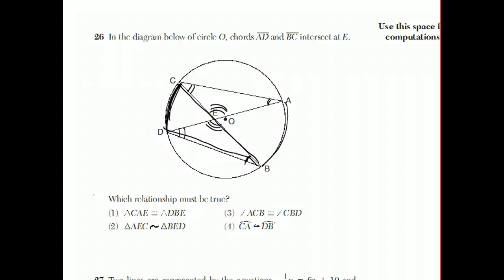What I have here are vertical angles that are equal, and these are equal because they're similar triangles. Now let's look at the choices. Does angle CAE have to be congruent? It has to be similar, but not necessarily congruent. Does triangle AEC have to be similar to BED? Here's E right here, and the answer is yes. That's the answer to this question. Similar triangles.